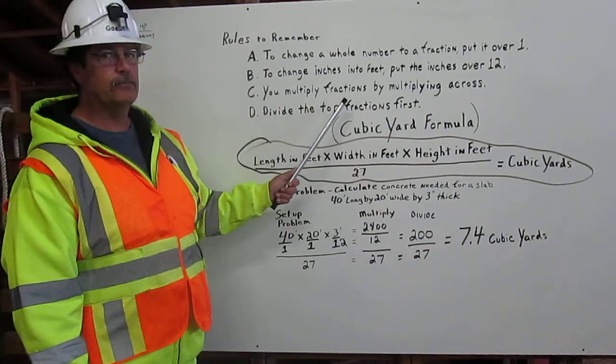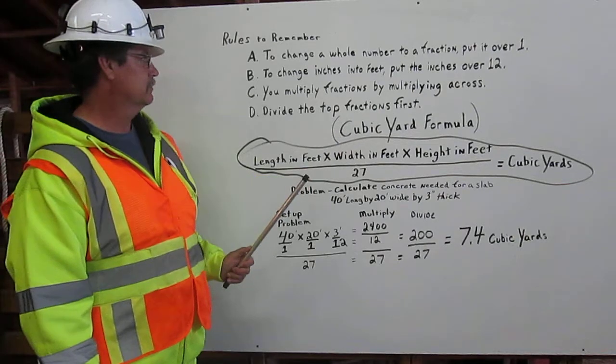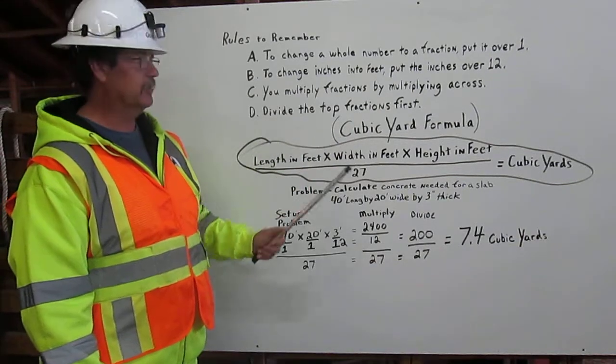C. You multiply fractions by multiplying across. D. Divide the top fractions first.